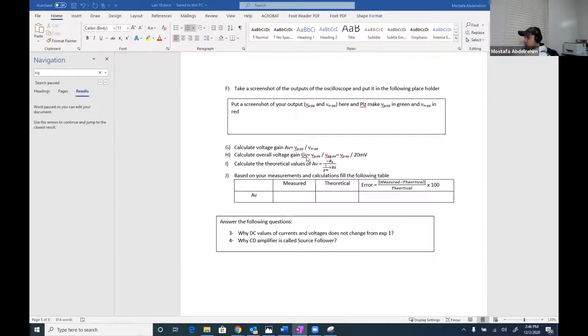Calculate AV, calculate GV, should be same as AV in that case, and here is the theoretical value, which is RS over 1 over Gm plus RS. And now you should answer these two questions, why you could source a follower, basically easy, because the AV is just one. So the output of the source is just equal to the input at the gate, it follows the input at the gate.